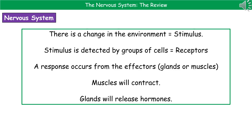The second key word we need to know is receptor. Receptors are groups of cells that detect the stimulus. Once a stimulus has been detected by those receptors, we end up with some kind of response from what's called an effector. Effectors are either glands or muscles. If it's a muscle, the response is that the muscle will contract, whereas if it's a gland being stimulated, it will release hormones.